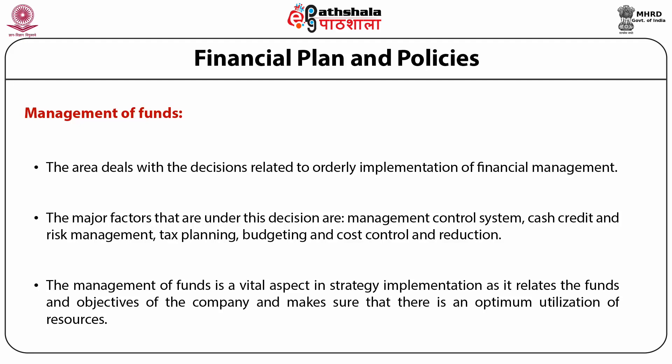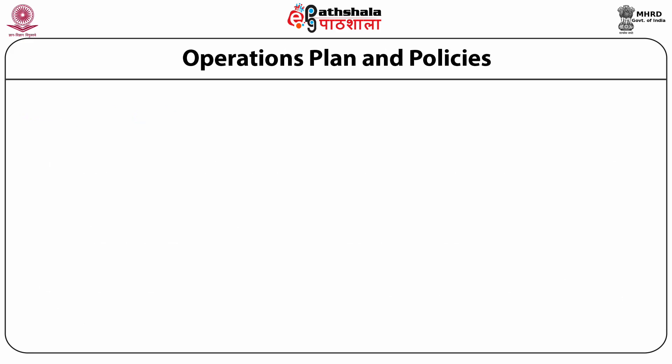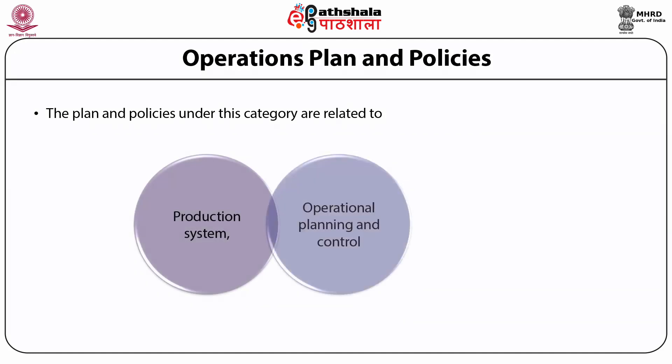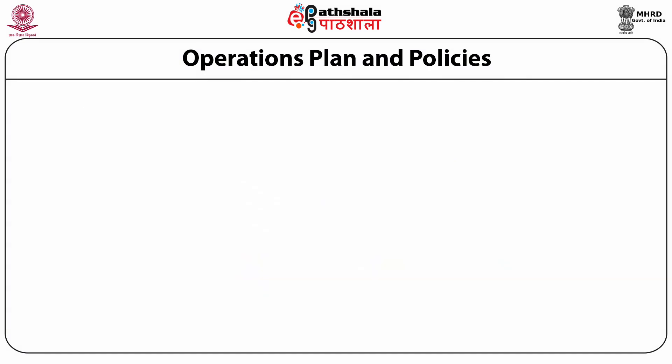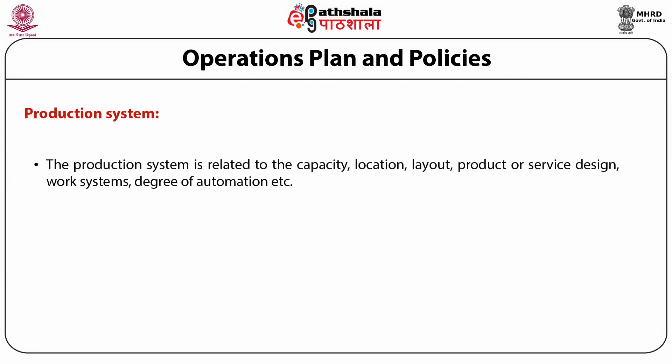Organizations should also put in place the appropriate operations plans and policies. The plan and policy under this category generally relate to three things: the production system, operational planning and control, and issues pertaining to research and development. When we talk of the production system, matters related to capacity, location, layout, product or service design, work systems and the degree of automation are to be addressed. All these plans and policies are critical as they can have a direct impact on the objectives of the company.